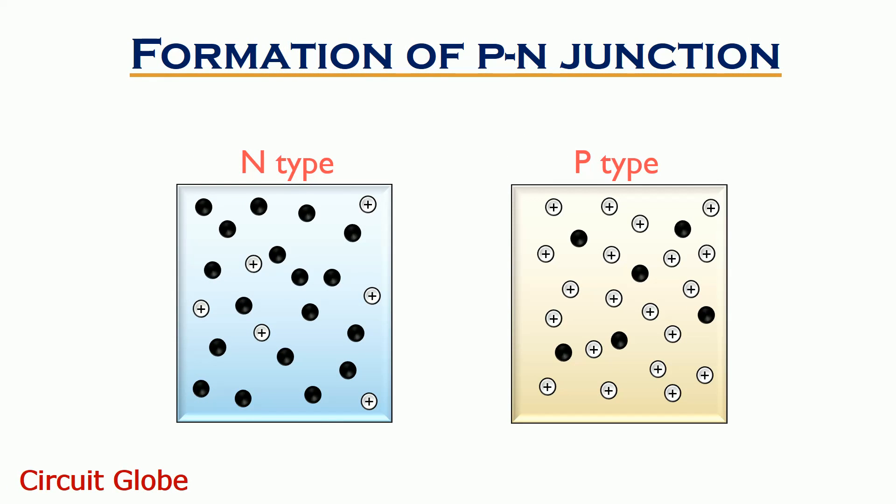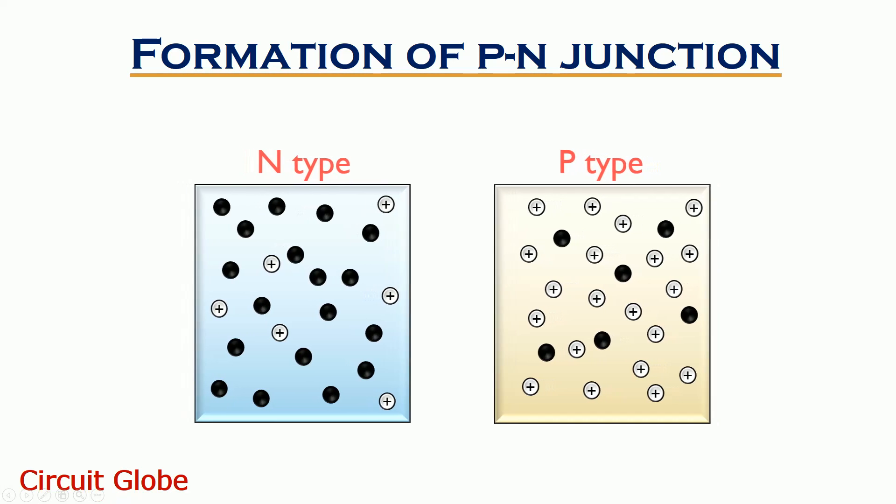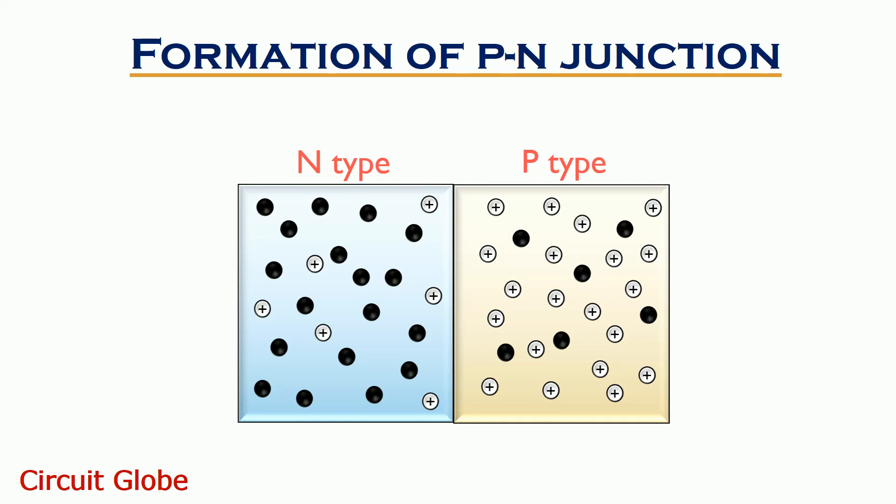Now, let's have a look at how a P-N junction diode is formed. An N type semiconductor material is fused with a P type semiconductor material, each having majority carriers as electrons and holes respectively.